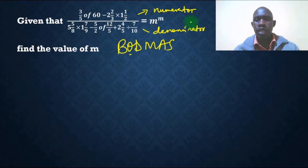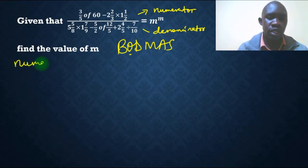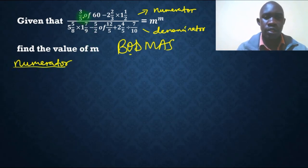So this part is the numerator and the lower part is the denominator. So in our case, I want us, we start by working out the numerator. And in that case, it is 3 over 5 of 60. So we don't have bracket, so we have of.